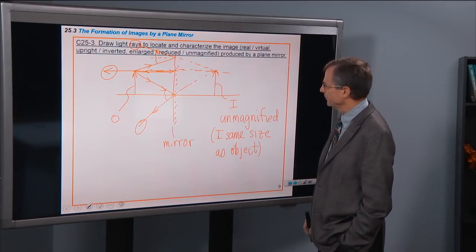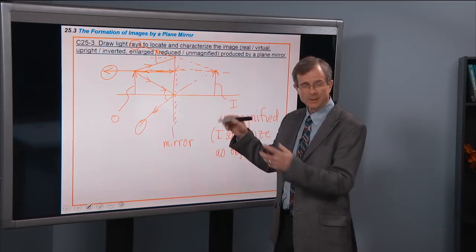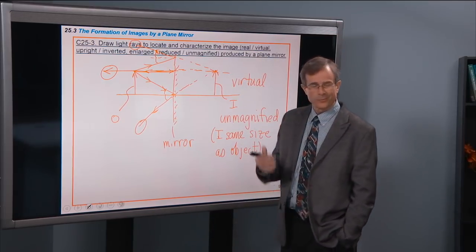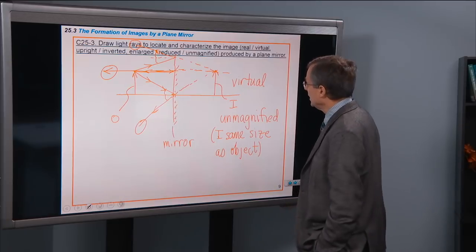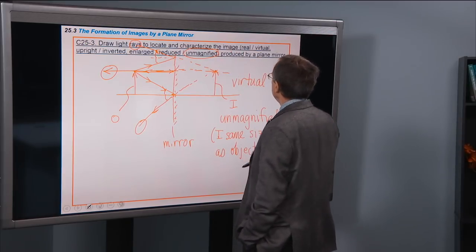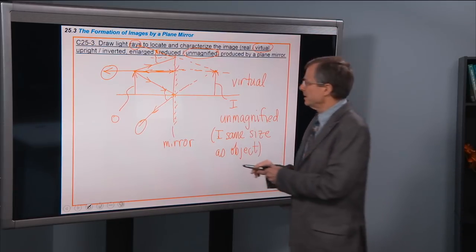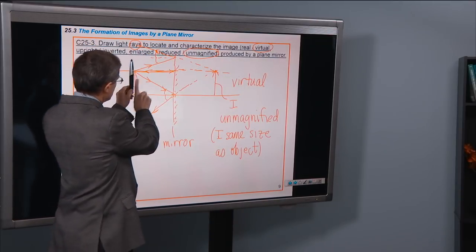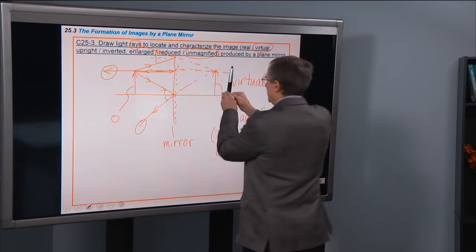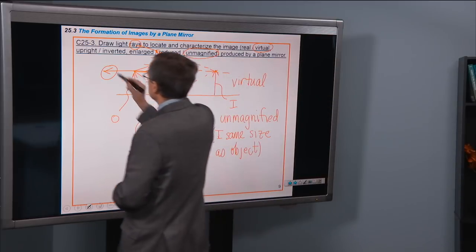Is it real or virtual? It's virtual, because the actual rays don't come from or pass through the image. All images in a flat mirror are virtual. It's not enlarged or reduced — it is unmagnified. And is it upright or inverted? The object is above the central axis, so it's an upright object. The virtual image is also upright — it's not flipped over, as we'll see in some other cases. So it's an upright image.